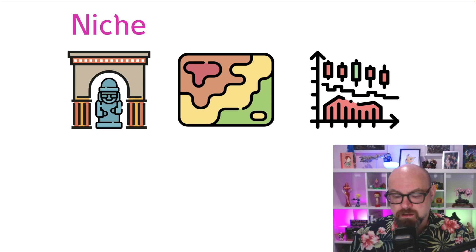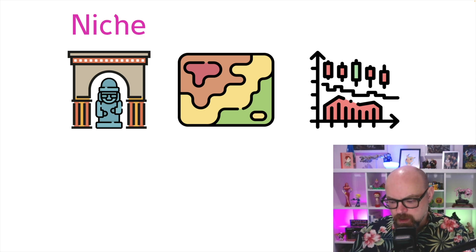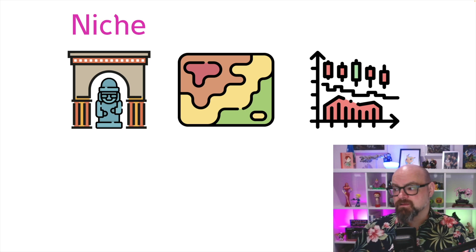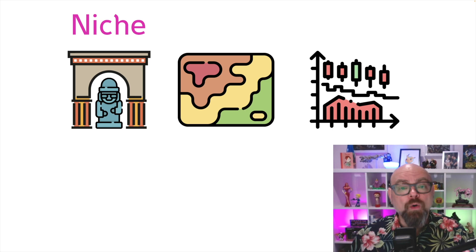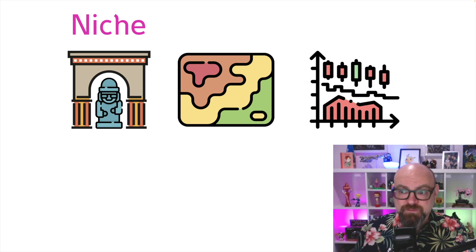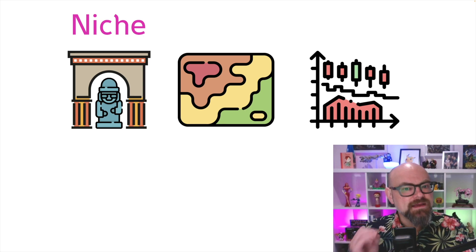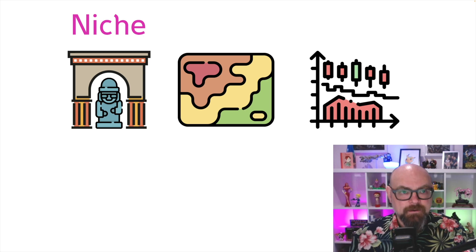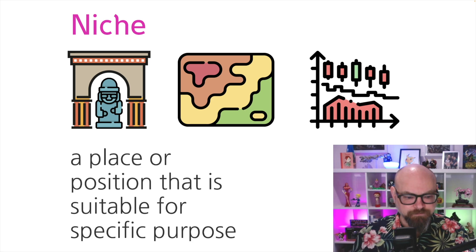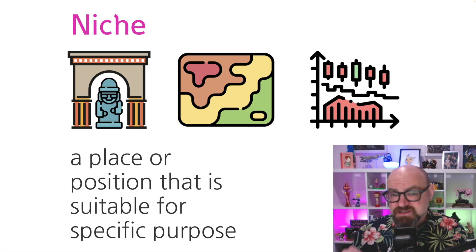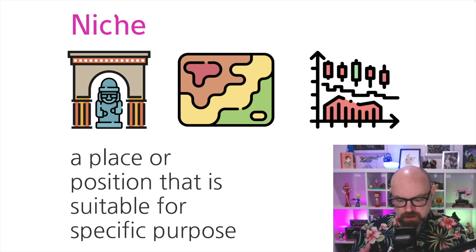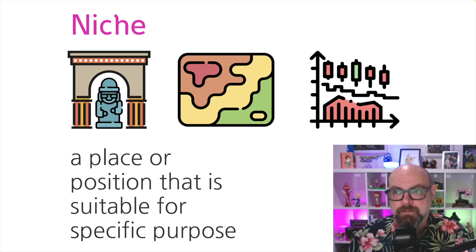In economics, the term niche has become a way to refer to specific markets within broader categories. You might think of organic pet food — that's a specific niche within the broader market of pet foods. So when we're talking about niches, we are being quite specific. Think of a niche as a specific place or position that is suitable for a specific purpose. It's not narrow, but it is defined.